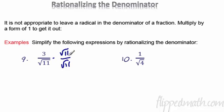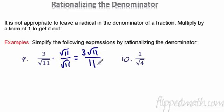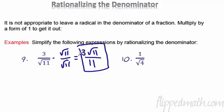Problem 9: 3 over radical 11. Multiply by radical 11 over radical 11. That gives us 3 radical 11 all over — what's radical 11 times radical 11? You multiply it by itself, so you get 11. Final answer: 3 radical 11 over 11. Check if 3 and 11 cancel — they don't, so this is as far as it goes.